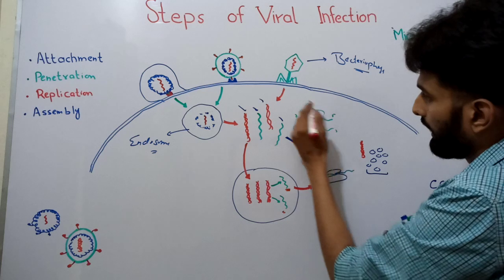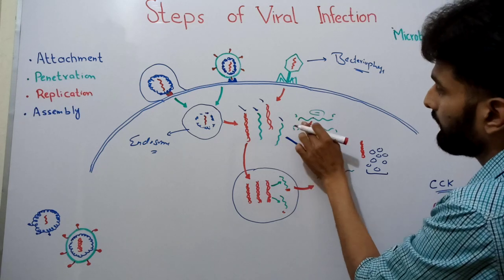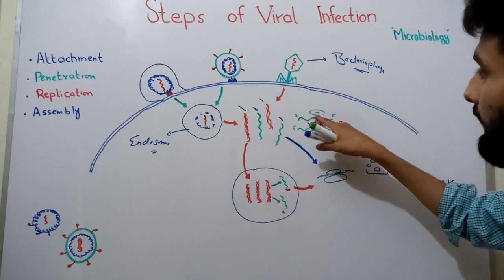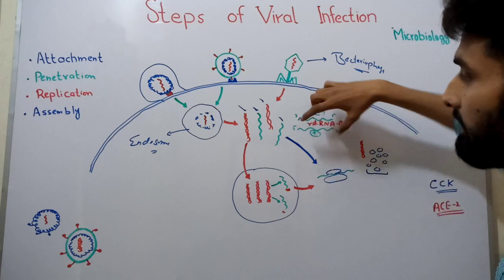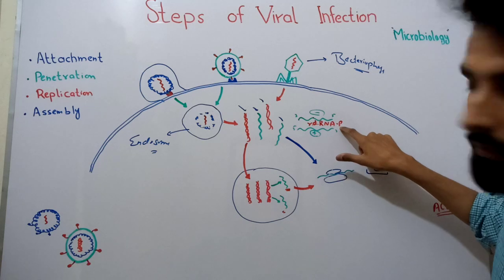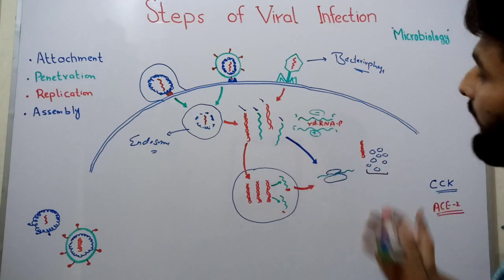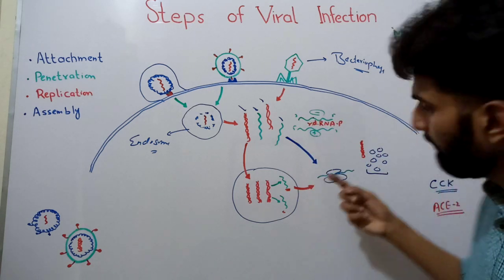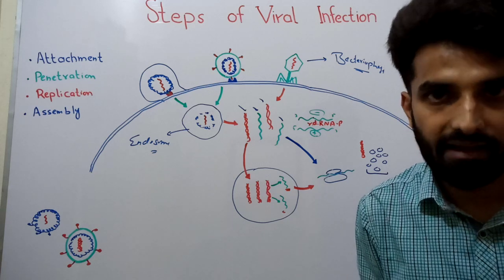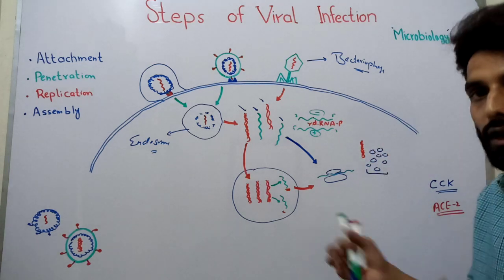This positive strand can then attach to the ribosome and begin translation to form proteins. The enzyme required to convert negative-sense RNA to positive-sense RNA is RNA-dependent RNA polymerase. Therefore, negative-sense RNA viruses carry this enzyme with them when they enter the host cell, so they can convert their negative-strand RNA into positive-strand RNA, which then attaches to the host ribosome to produce all the structural proteins needed for new virus particles.